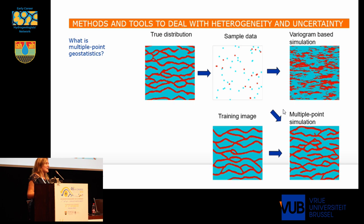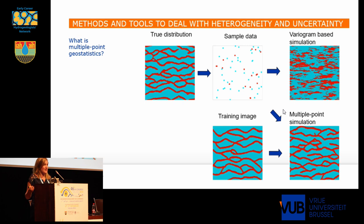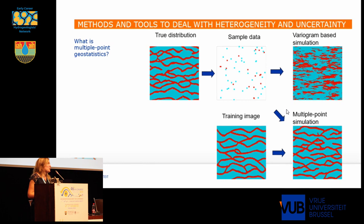What we do in multiple-point geostatistics is we define a training image, as you can see here. A training image is a key concept in this method: we draw a picture of how we think geological heterogeneity looks like. It is essentially a database of the patterns that we expect, or what the geologists expect, in a certain environment. The simulation method then generates simulations which are consistent with this training image — you will see the same patterns of geological heterogeneity in the simulations as you have defined in your training image.